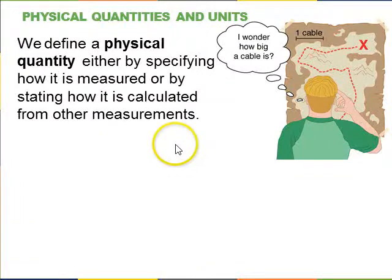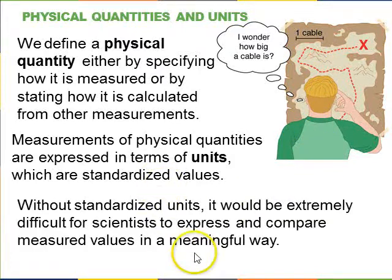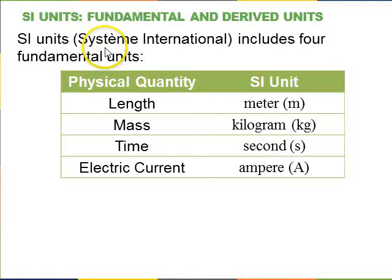So, let's start talking about units. We define a physical quantity either by specifying how it's measured, or by stating how it's calculated from other measurements. So, measurements of physical quantities are expressed in terms of units, which are some standardized values. So, the textbook has a picture of someone looking at a map that shows how to get around some mountains, and there's a scale on the map which shows the length of one cable. But this guy is looking and wondering, wait, how big is a cable? And so whoever made the map wasn't clear in letting the reader know what the scale was, because he didn't have a standardized unit. So, we have standardized units in science. It's called SI units. It's système international, because it started in France.